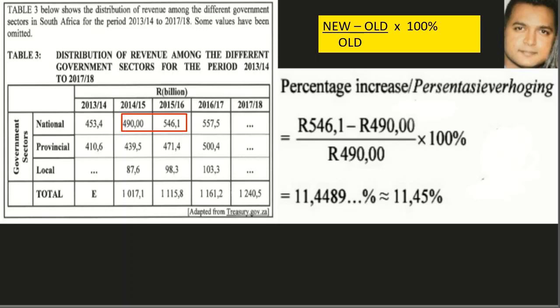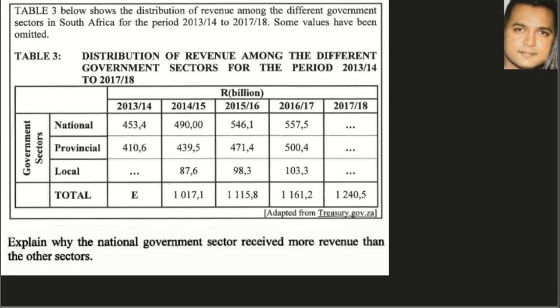We multiply through times 100% because it is a percentage increase calculation, and we arrive at 11.44, which we approximate to two decimal places to get 11.45%.